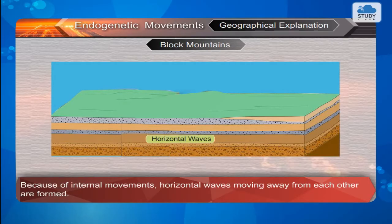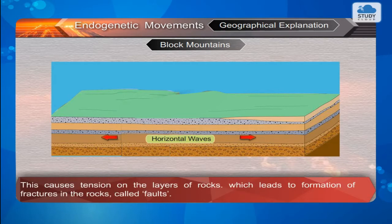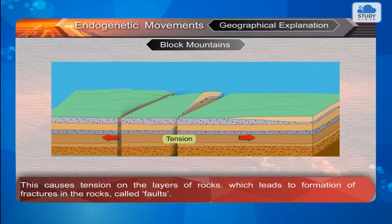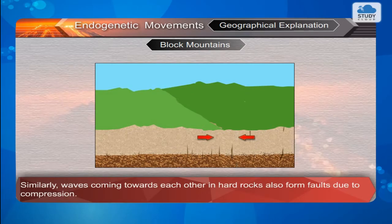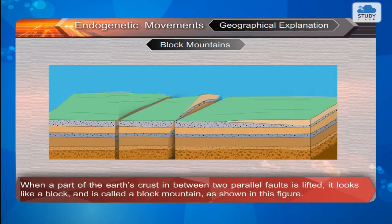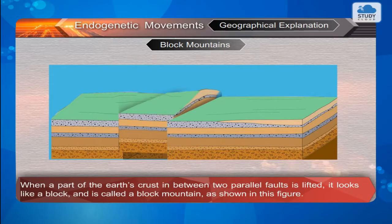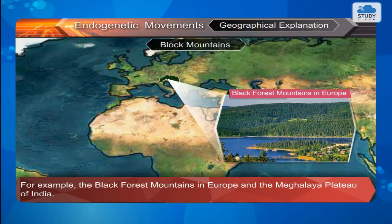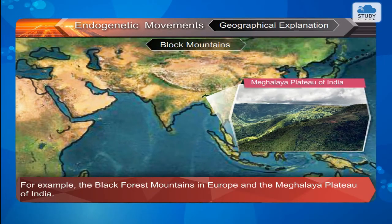Block Mountains: Because of internal movements, horizontal waves moving away from each other are formed. This causes tension on the layers of rocks, which leads to formation of fractures in the rocks called faults. Similarly, waves coming towards each other in hard rocks also form faults due to compression. When a part of the earth's crust in between two parallel faults is lifted, it looks like a block and is called a block mountain as shown in this figure. Block mountains are flat-topped with steep slopes and no peaks in the early stages. For example, the Black Forest Mountains in Europe and the Meghalaya Plateau of India.